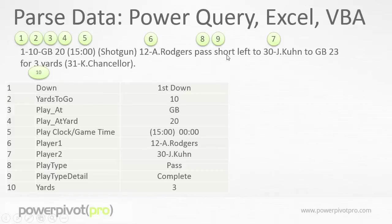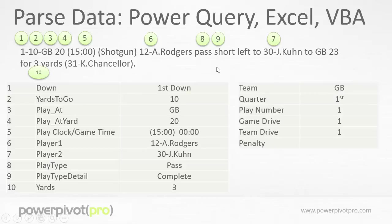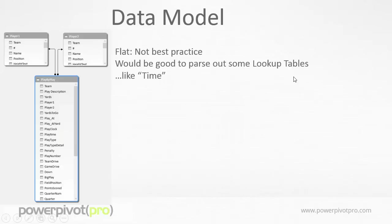And then some detail: was the pass completed, was it a touchdown, and so forth. And finally, how many yards. I also grabbed some ancillary information — team, quarter, play number, etc. I pulled that all into my data model. Now there are two lookup tables for players, player 1 and player 2. I grabbed that information from the player rosters, so I have their height and weight, and you can slice and dice data based on that. But otherwise it's a pretty flat table.